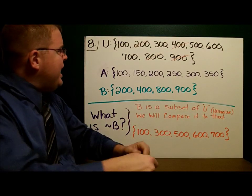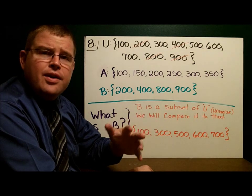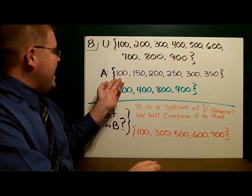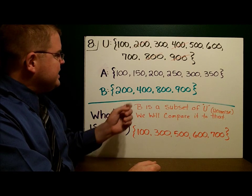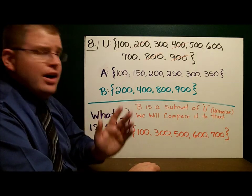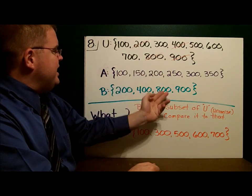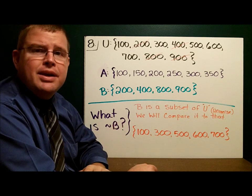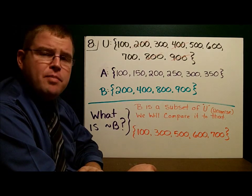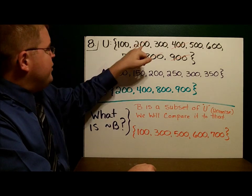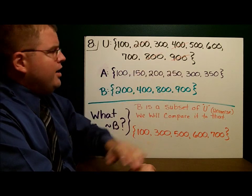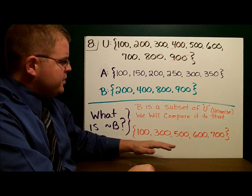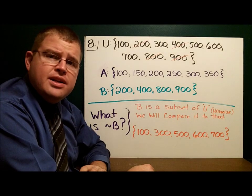Next example, this is example eight. We have U, the universe. The universe is the giant abyss of all the possible things that could be in our sets. We have A and B. B is a subset of the universe. What is in the complement of B? Well, let's cross off what we have. We have 200, 400, 800, 900. And the things left over in the universe are the complement of B. So we have 100, 300, 500, 600, and 700. Those are the numbers in the complement of B.